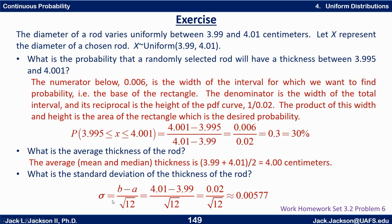The standard deviation by the formula I gave to you is the length of the interval, b minus a. That's 4.01 minus 3.99 which is 0.02. And I told you you just have to divide it by square root of 12. That's approximately 0.00577.